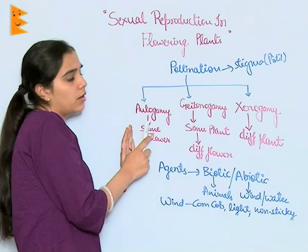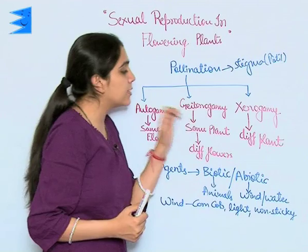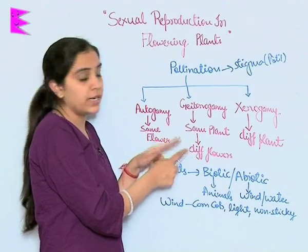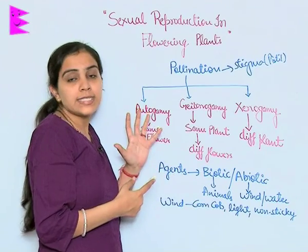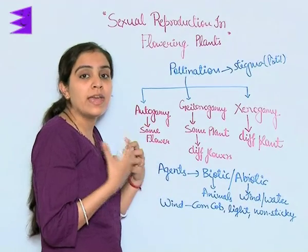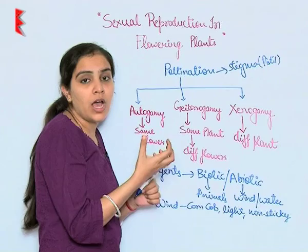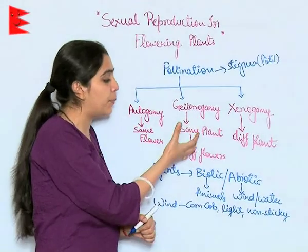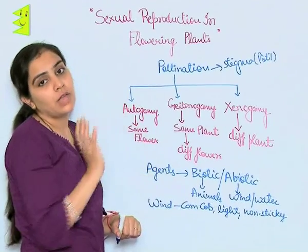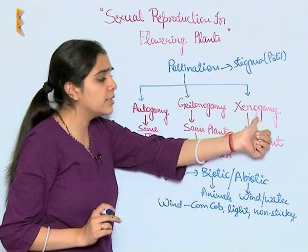In Autogamy there is no cross pollination and no genetic differentiation. Next is Geitonogamy. In Geitonogamy the plant is the same but the flowers are different. As you can see around you, on the same plant there are numerous flowers, so the pollens from the anther of one flower will reach the pistil of another flower on the same plant. This is Geitonogamy.